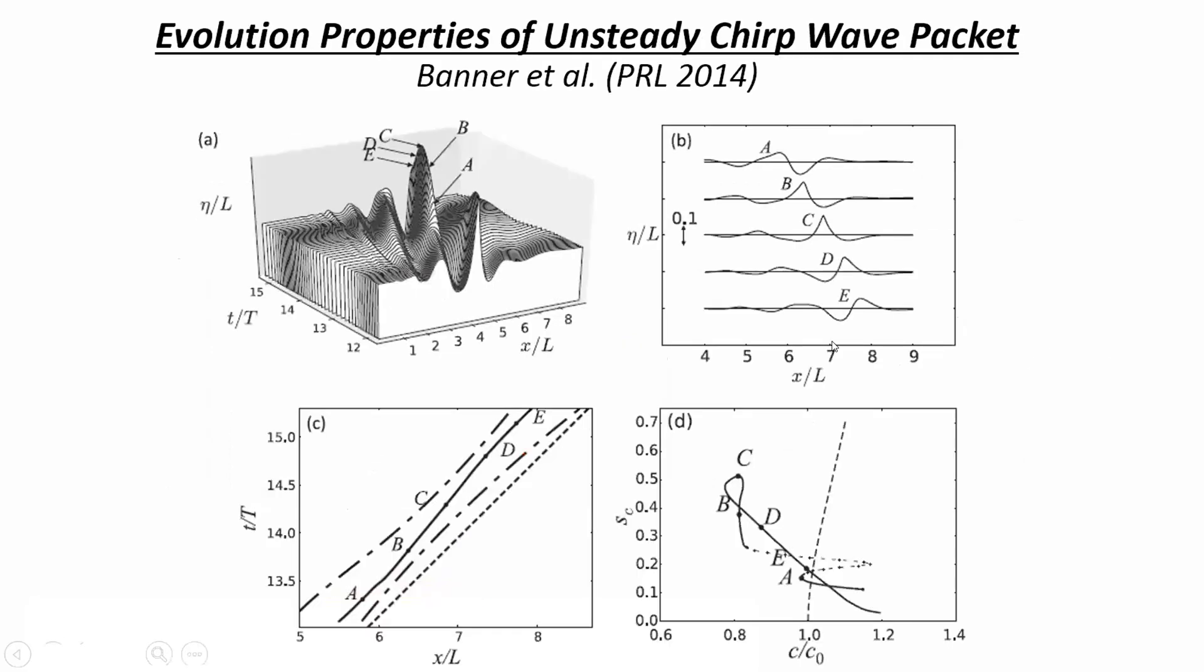When you push a packet, an evolving chirp packet, you get this kind of motion. This is a time stack that way, spatial out this way. We focus our attention on this growing crest here, this little roguey looking thing. The sequence I want to focus on is the locations A, B, C, D, E, with C being at the maximum of the crest evolution there.